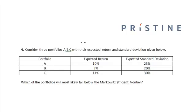For three portfolios A, B, and C, with their expected return and standard deviation given in the table below, which one of the portfolios will most likely fall below the Markowitz efficient portfolio frontier?